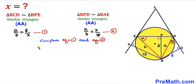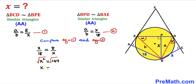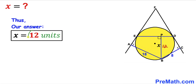So we can write: x divided by 18 equals 8 divided by x. Cross multiplying gives x squared equals 8 times 18, which is 144. Taking the square root of both sides, x equals positive 12. Therefore our length x turns out to be 12 units. Thanks for watching and please don't forget to subscribe to my channel for more exciting videos.